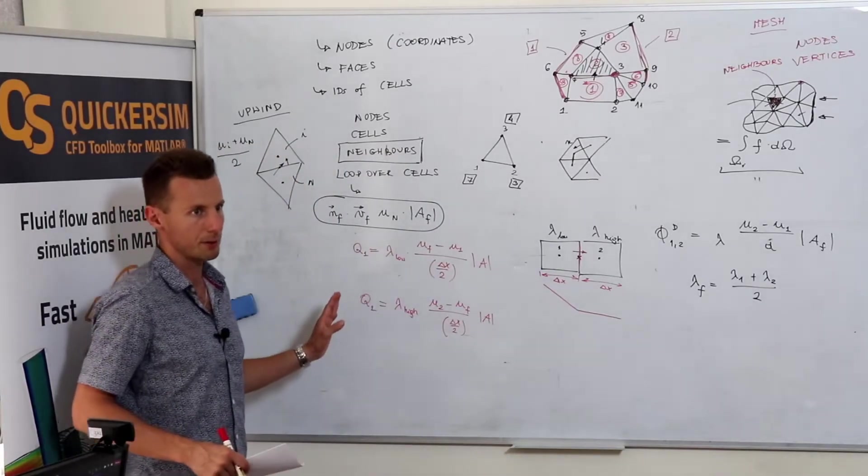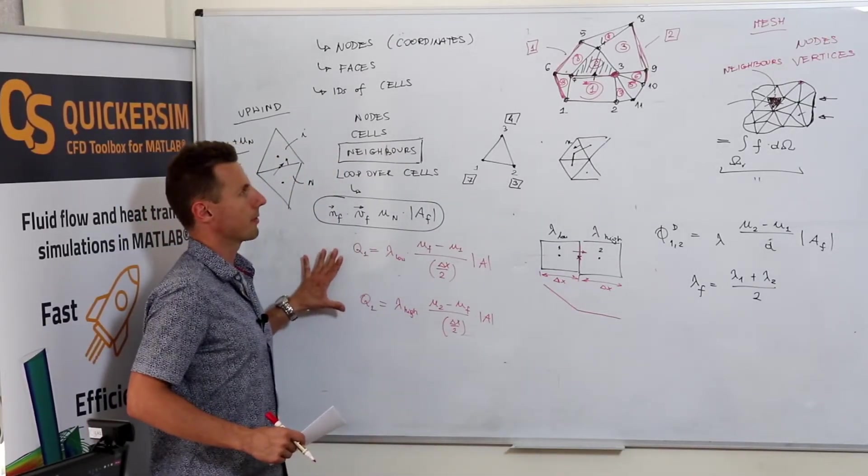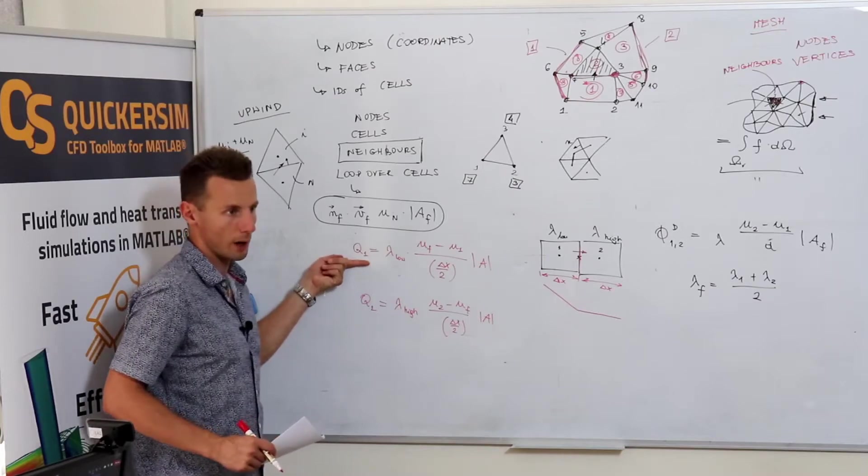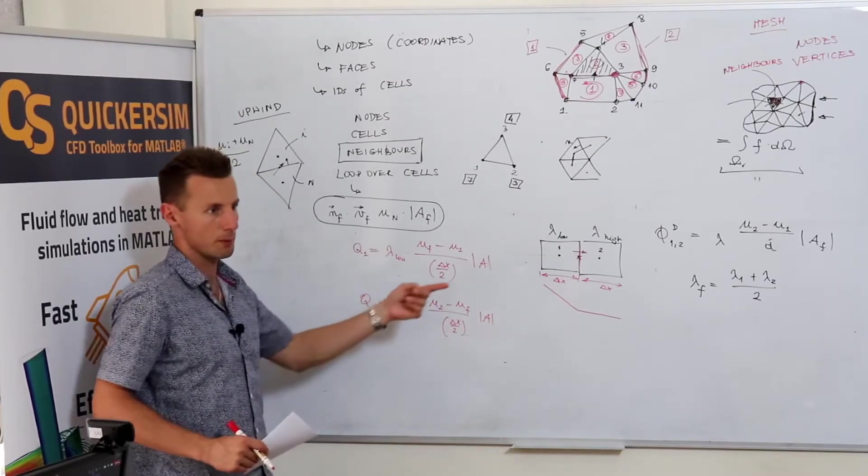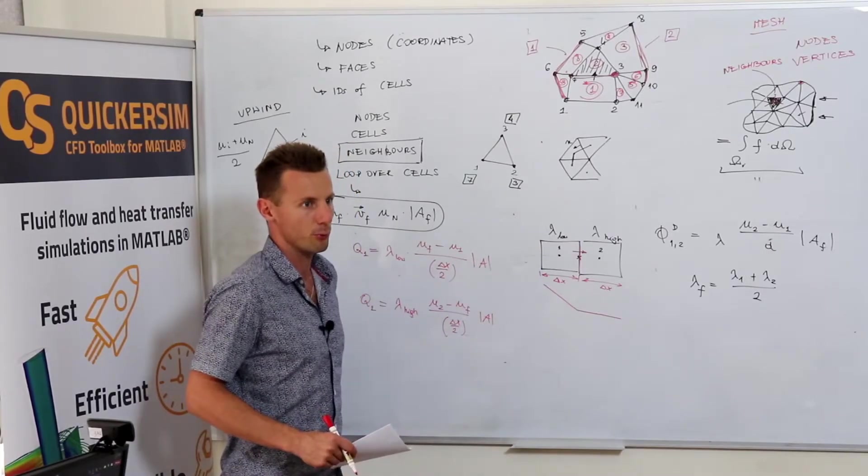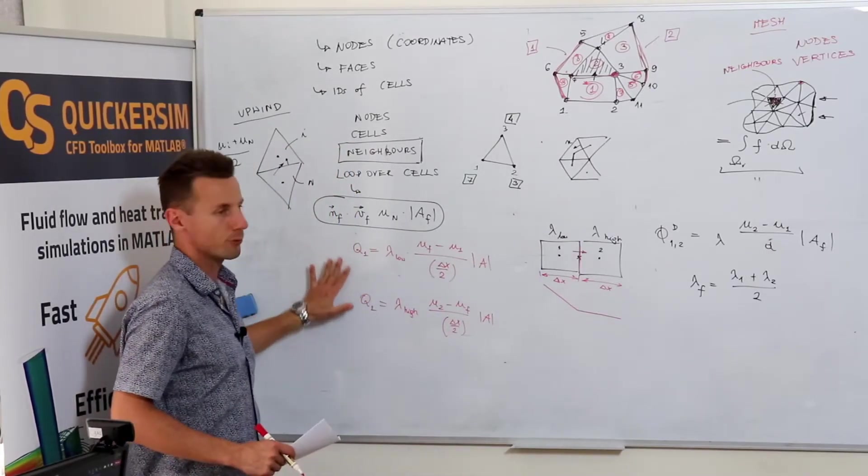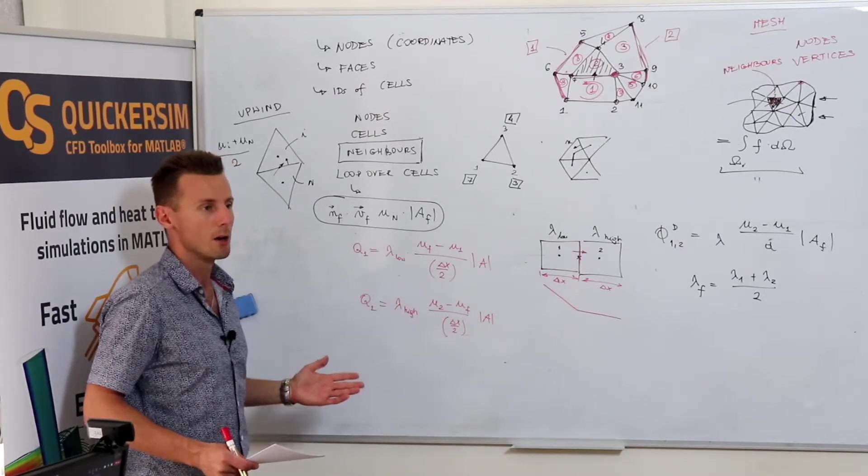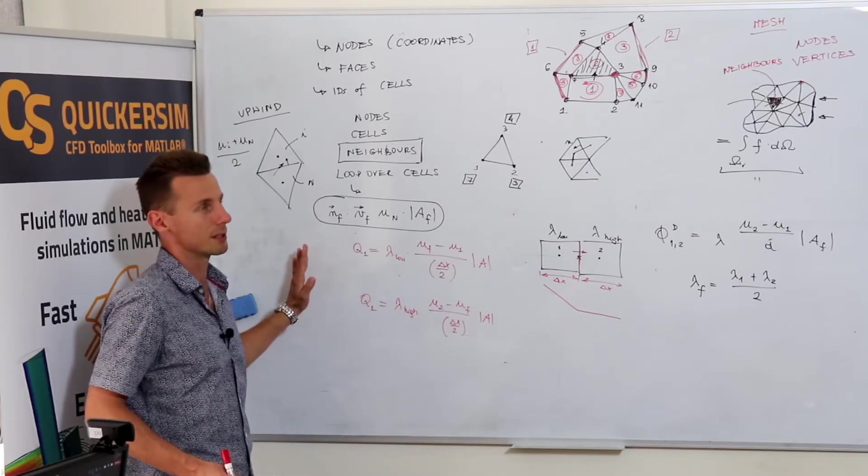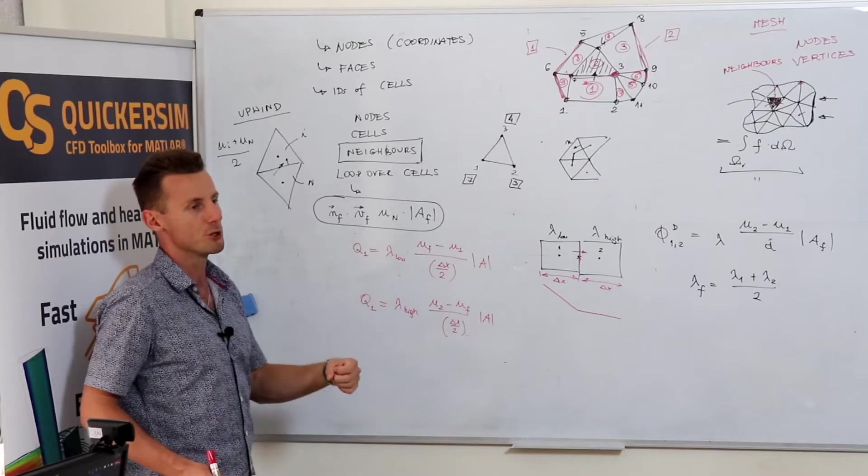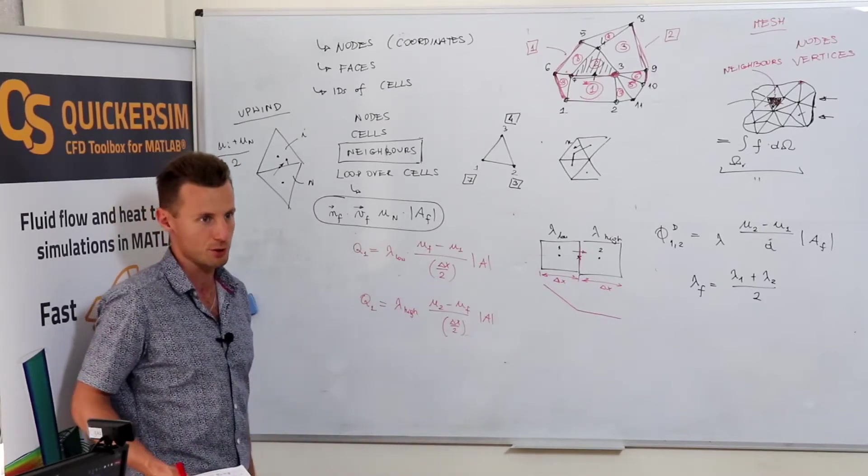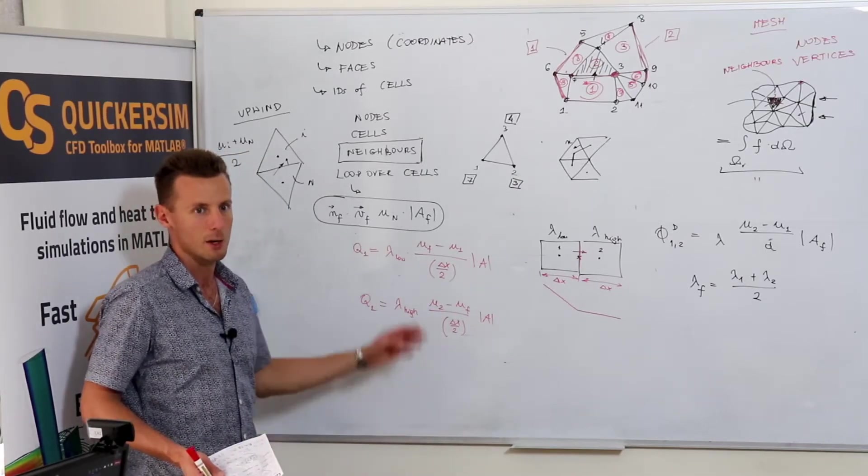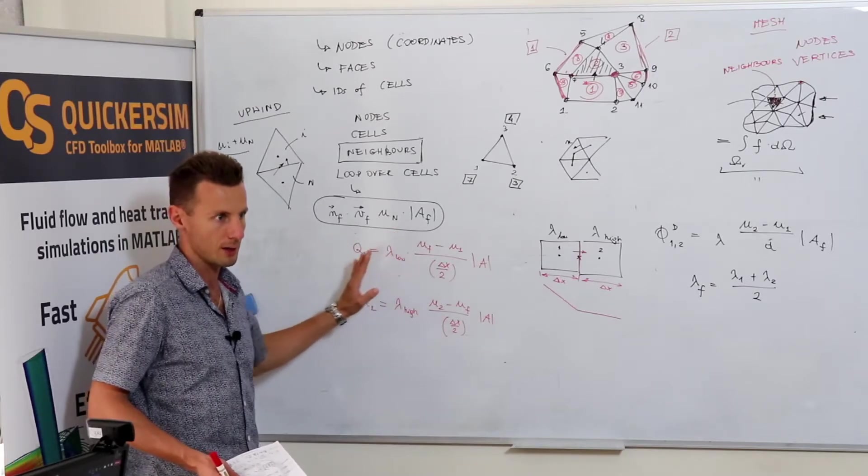And as we said, the finite volume method is the method that is conservative when it comes to the scheme. So, exactly Q1 and Q2 should be exactly the same. And if we do not fulfill this condition, we have basically destroyed the scheme, and we have destroyed the conservativeness of the scheme. So, if you implement something that is not conservative anymore, then you will be generating energy or you will be losing energy or maybe you will be generating mass or losing mass in your scheme depending on what kind of equation you are solving.